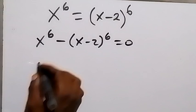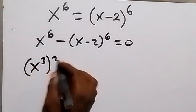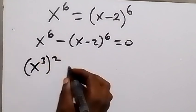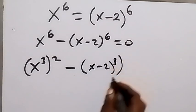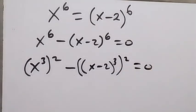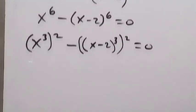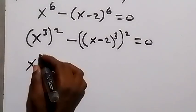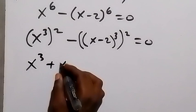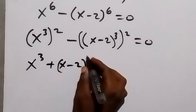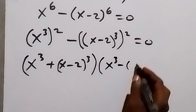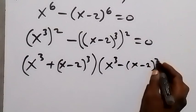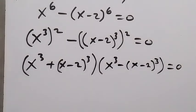From here we can rewrite this as x raised to power 3, then raised to power 2 — since 2 times 3 is 6 — minus x minus 2 raised to power 3, then also raised to power 2, equals to 0. From here we have a difference of two squares, which can be written as x raised to power 3 plus x minus 2 raised to power 3, multiplied by x raised to power 3 minus x minus 2 raised to power 3, which equals to 0.